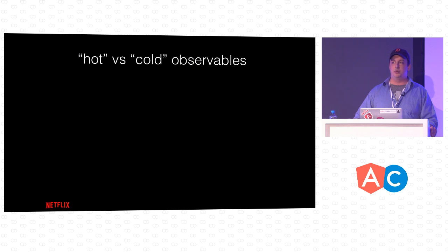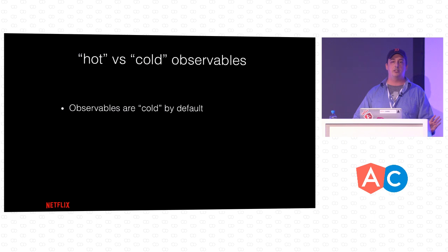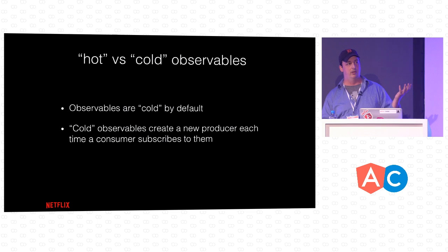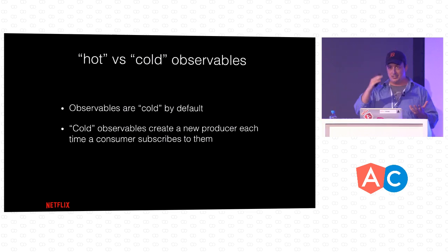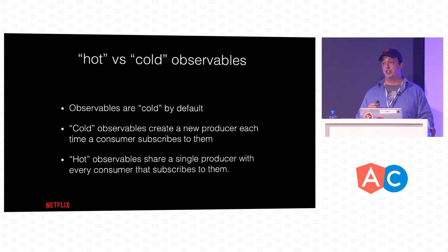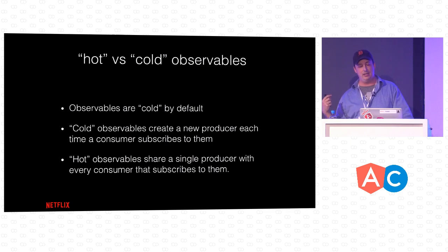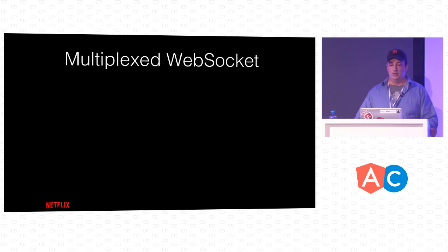A quick point on hot versus cold observables: all observables are by default cold. When you subscribe, it sets up one producer for that consumer. The next time you subscribe, it sets up one producer again. If you make it hot by calling share() on it, you have one producer for many consumers. You'll do this with the WebSocket example coming up — you don't want to set up a whole bunch of WebSocket connections for every observable you've filtered and mapped off of it.